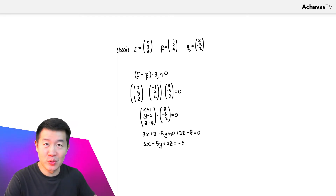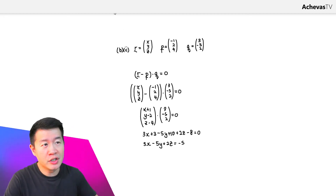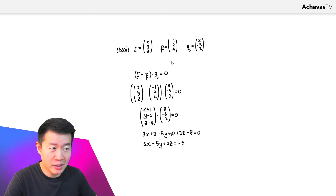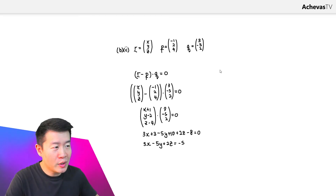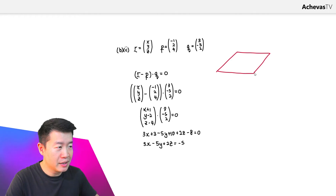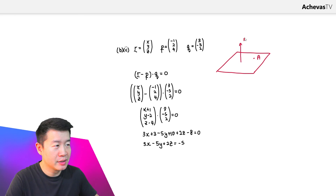Now let's discuss what this equation is actually representing from the perspective of the variable point R. On Achievers TV, under Vectors Theory Outline, I discussed the formation of the dot product equation of a plane. When you look at a plane — say it passes through point A and is perpendicular to a normal vector n — then n is always perpendicular to the plane pi.